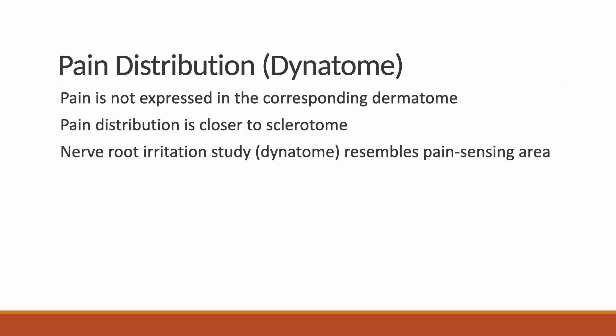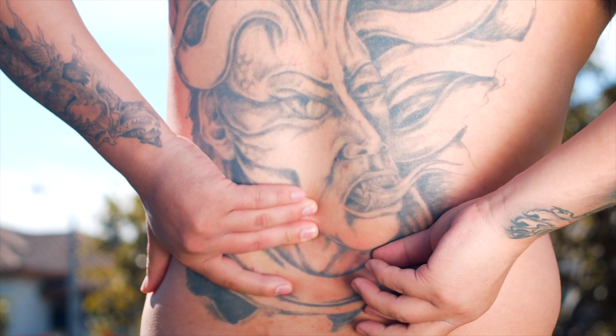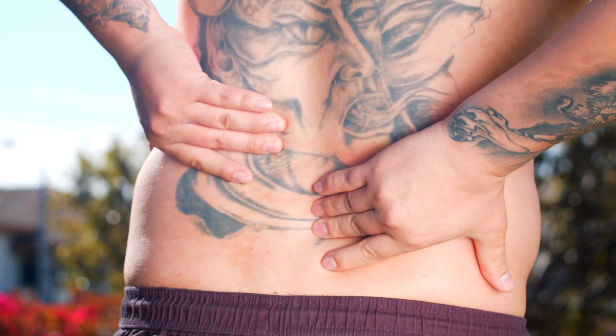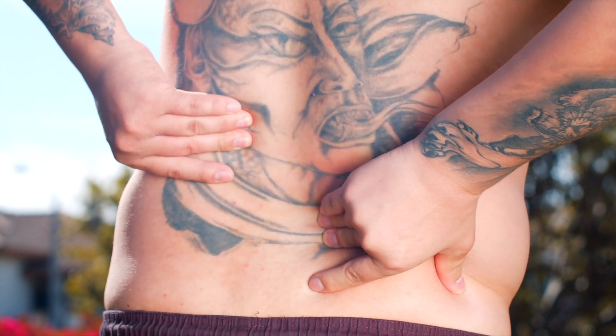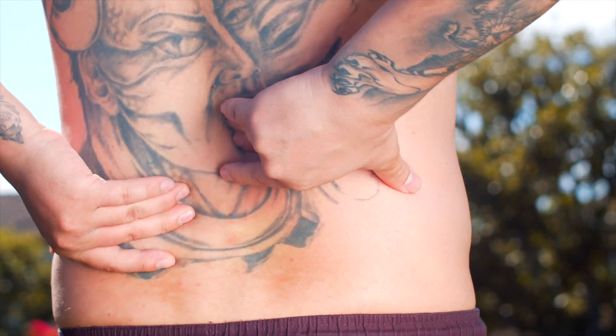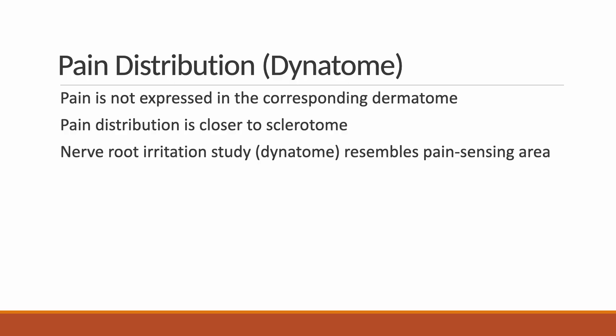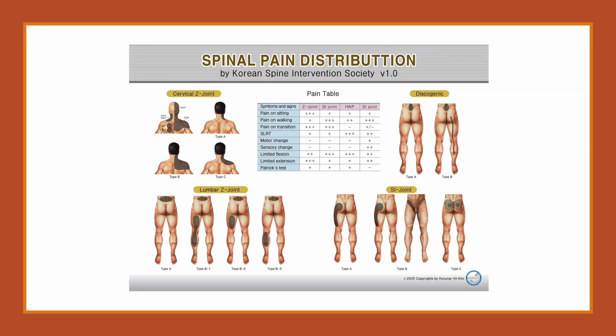Pain distribution diagram is an essential step for spinal pain evaluation. Many young pain practitioners believe pain refers to dermatomal distribution. However, pain is not expressed in the corresponding dermatome — pain distribution is closer to sclerotome. The nerve root irritation study, called Dynatom, resembles a pain sensing area. My mentor, Professor Kim, studied somatic and radicular Dynatom pain distribution patterns and delivered them to the public.